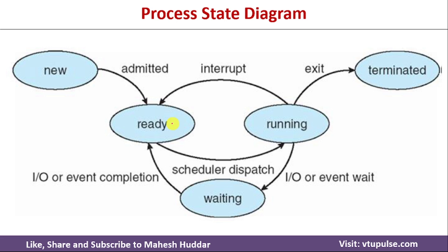Whenever you create a process, it will go through different states like new state, ready state, running state, waiting state, and terminated state. Whenever a process moves from one state to another, its state has to be maintained properly. For example, if a process was running on CPU and then moved to waiting state, it must have completed some CPU time already, so we need to continue from that point. That is the reason we need to maintain the state of each process in a particular data structure.